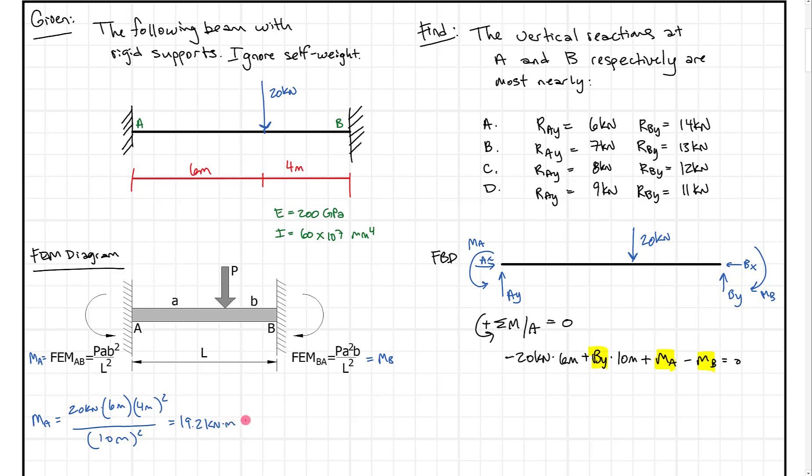For MB, we basically do the same thing but flip a few numbers around. All I really did was flip where this square goes, and the result I get here is 28.8 kilonewton meters.